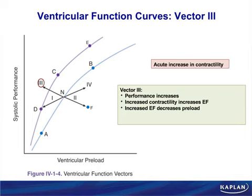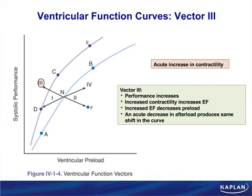Think about things causing increased contractility on clinical vignettes: beta agonists like norepinephrine, epinephrine, dobutamine, isoproterenol, dopamine; drugs like digoxin (a sodium-potassium ATPase blocker); amrinone and milrinone (phosphodiesterase inhibitors). We get the exact same shift if afterload goes down — vector 3 could therefore be an acute increase in contractility or a decrease in afterload, i.e., peripheral arteriolar vasodilation. Afterload, again, is TPR.